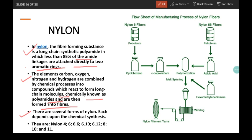There are several types of nylon. It depends upon the chemical synthesis. They are nylon 4-6, 6-6, 6-10, 6-12, 8-10, and 11.